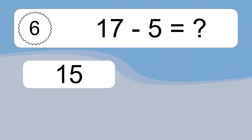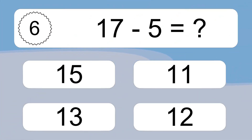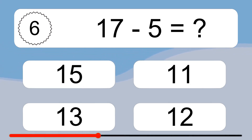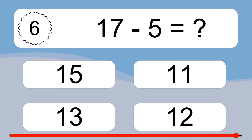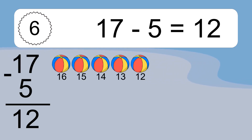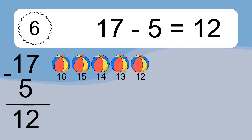17 minus 5 equals what? 17 minus 5 equals 12. Let's count it: 16, 15, 14, 13, 12.